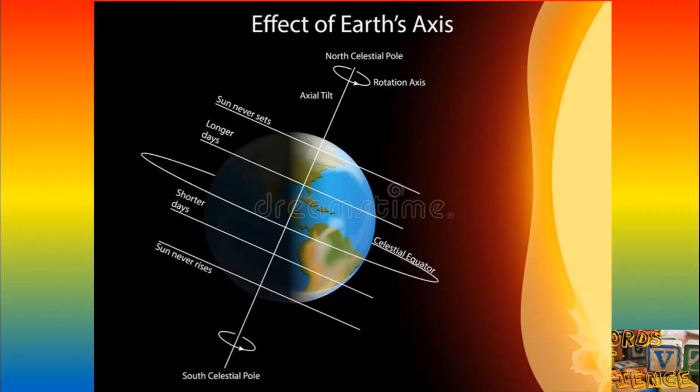At the same time, the South Pole is inclined the full 23 and a half degrees toward the sun, so that all points within 23 and a half degrees of that pole will enjoy uninterrupted sun for at least one full day.